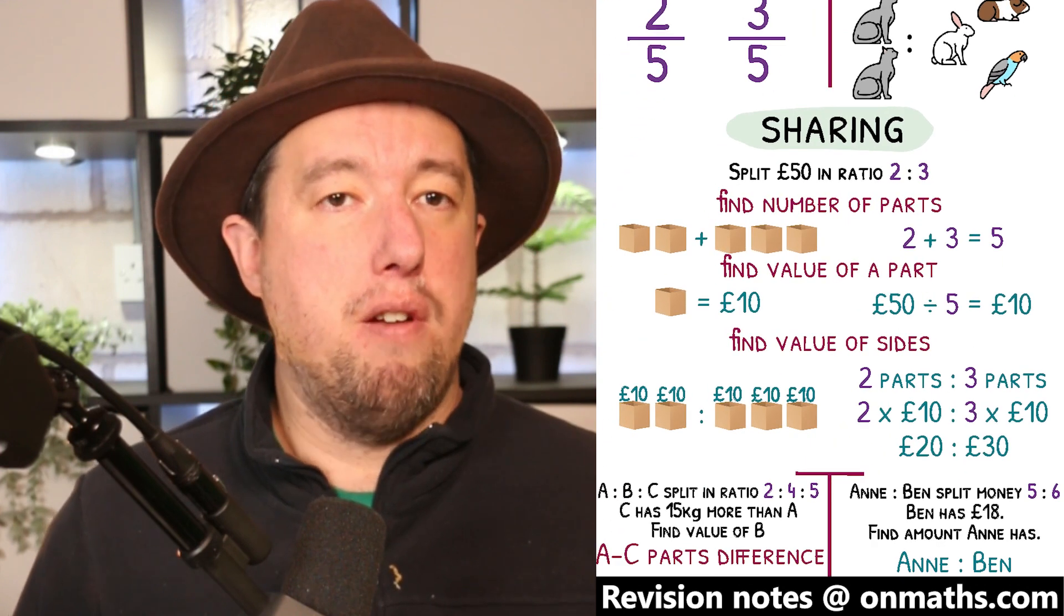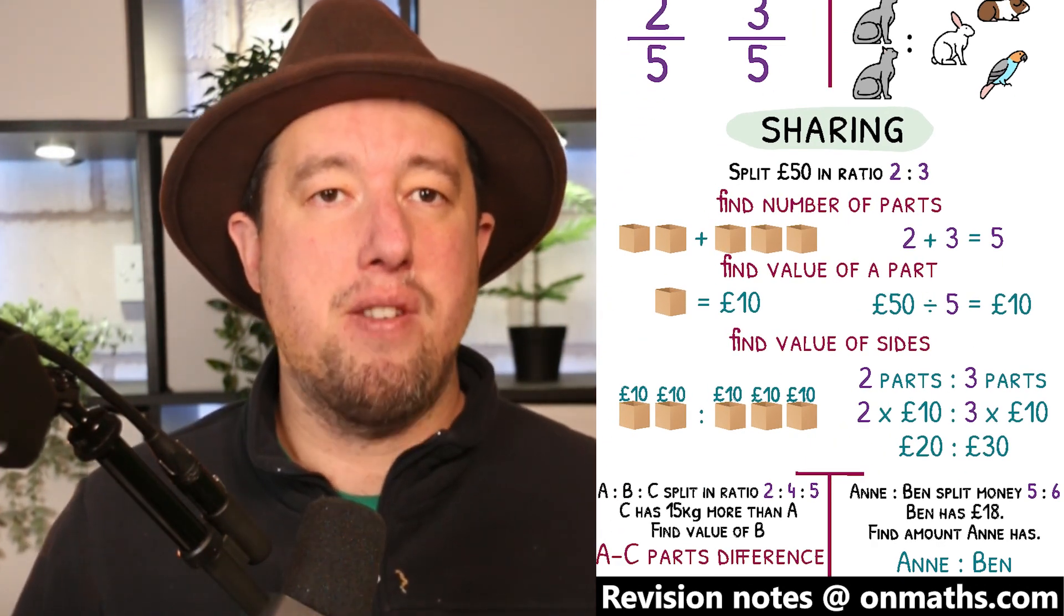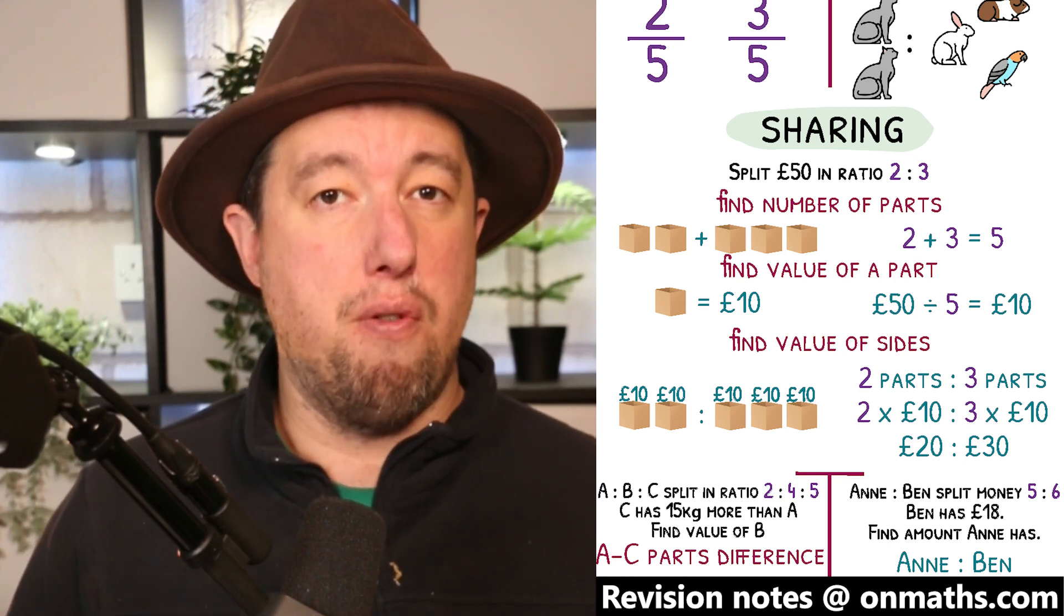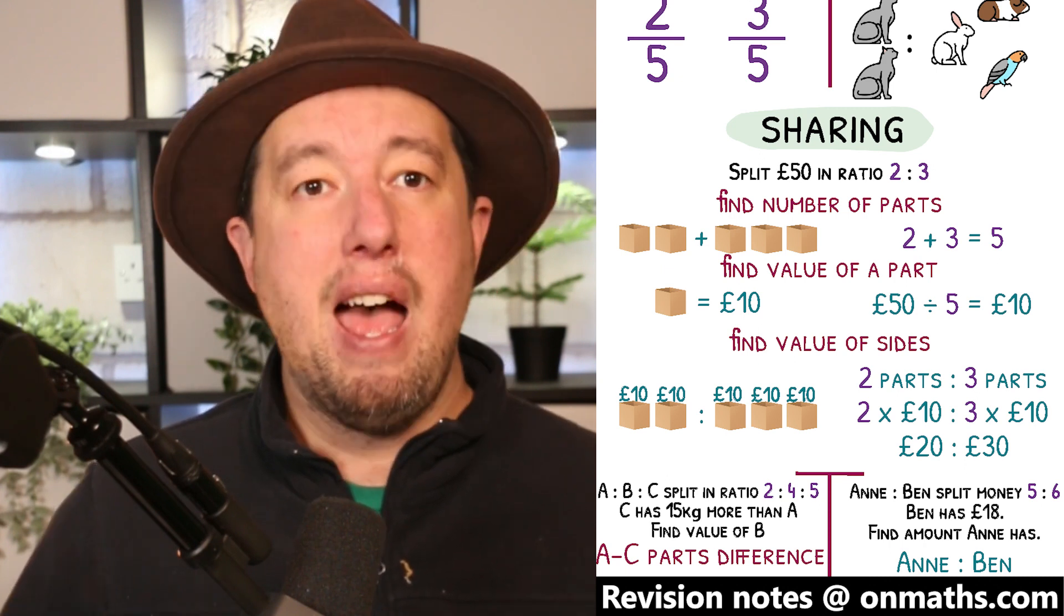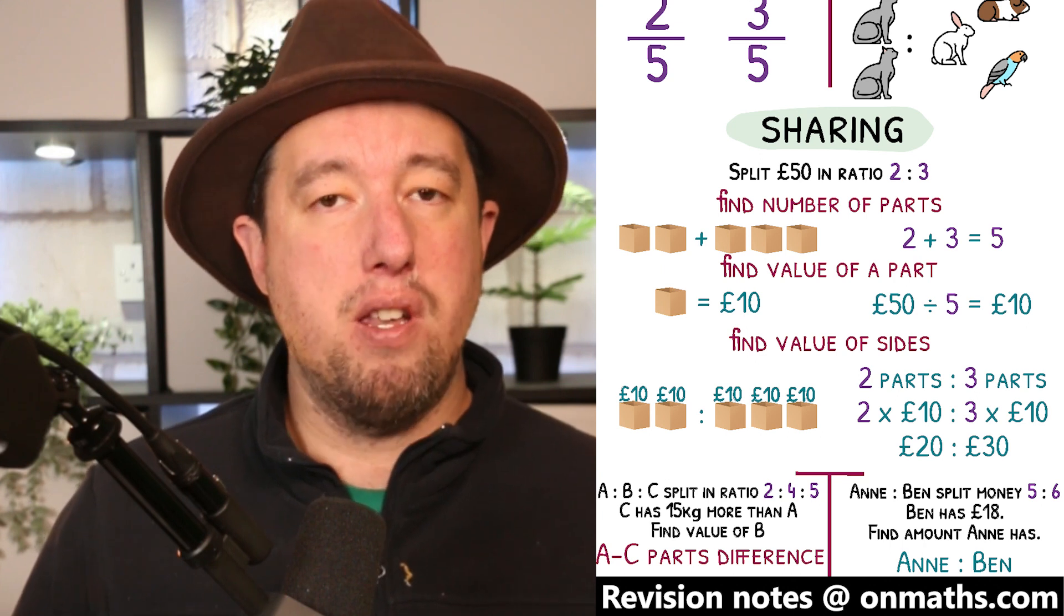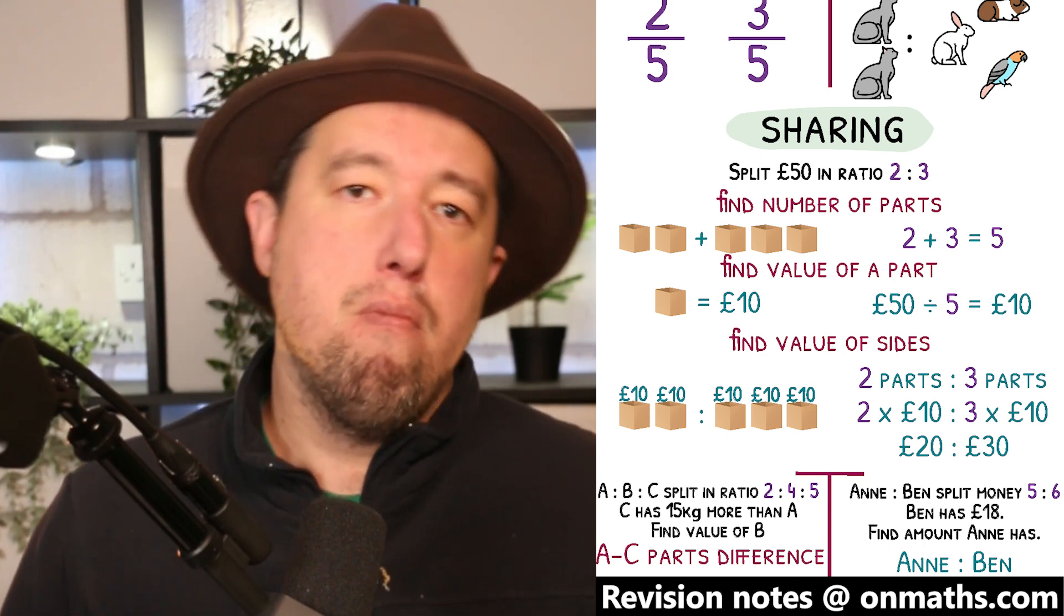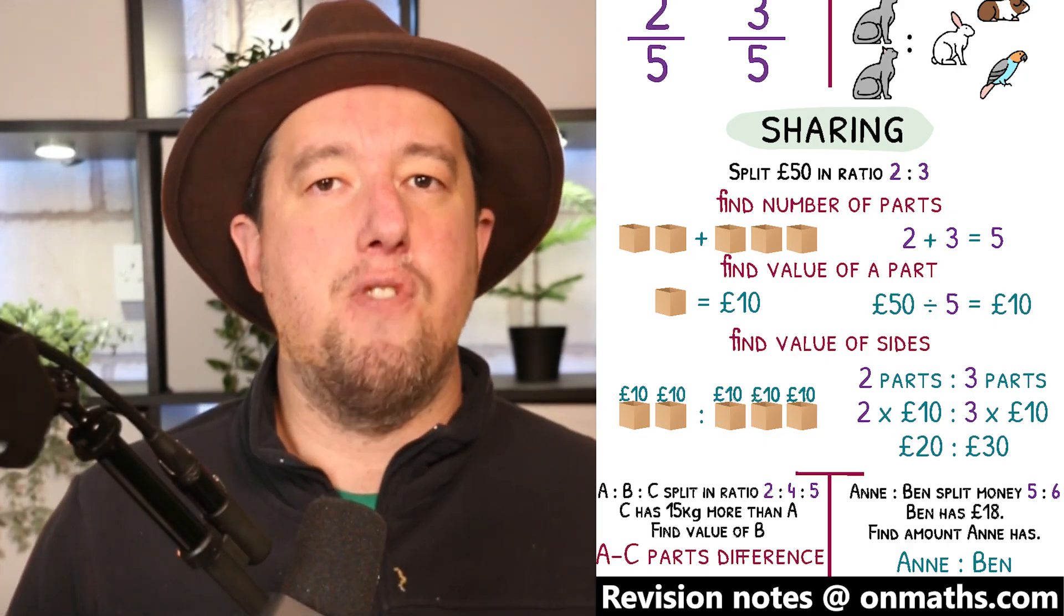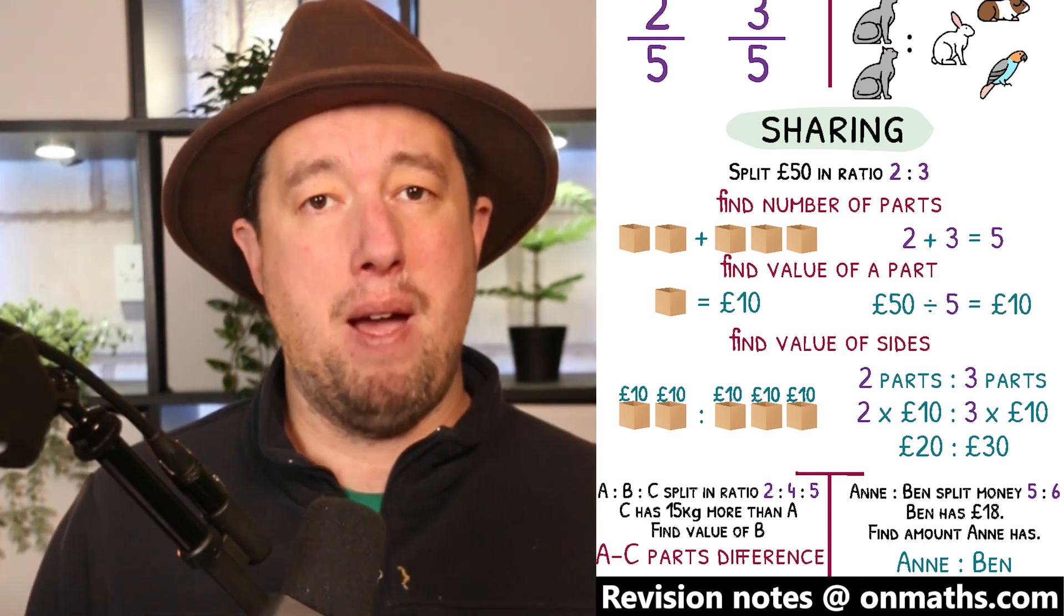Imagine that each part in a ratio is a box, and all boxes must have the same amount of stuff in them. If we wanted to split £50 in the ratio of 2 to 3, we can represent the ratio as 2 boxes on the left and 3 on the right. The first step is to figure out how many boxes or parts we have in total. 2 plus 3 will mean that there are 5 boxes. I have £50 to give to all my boxes,